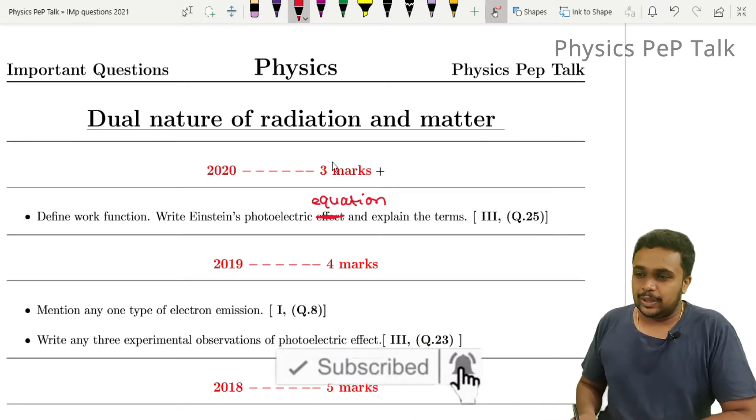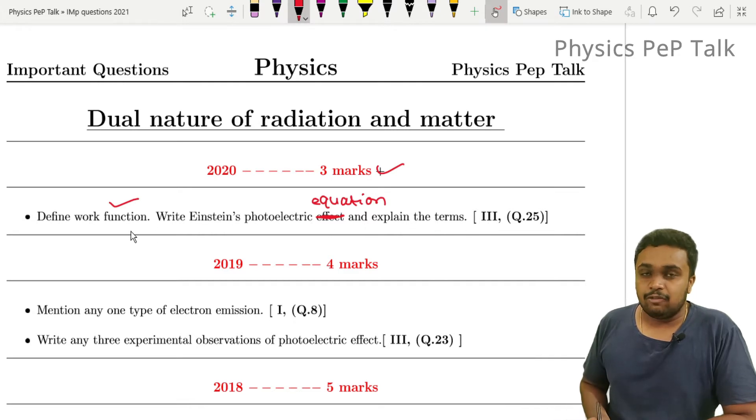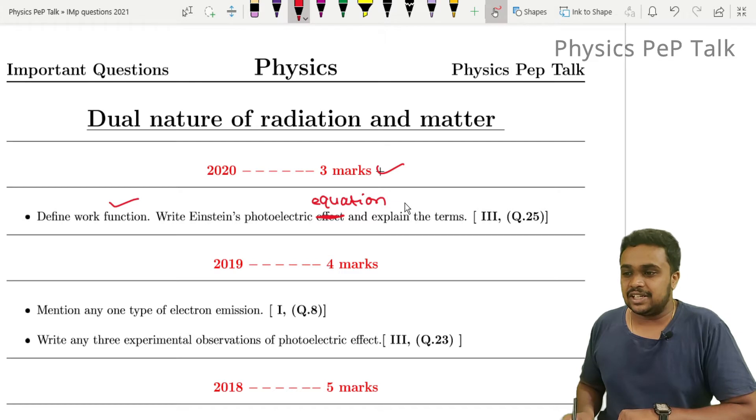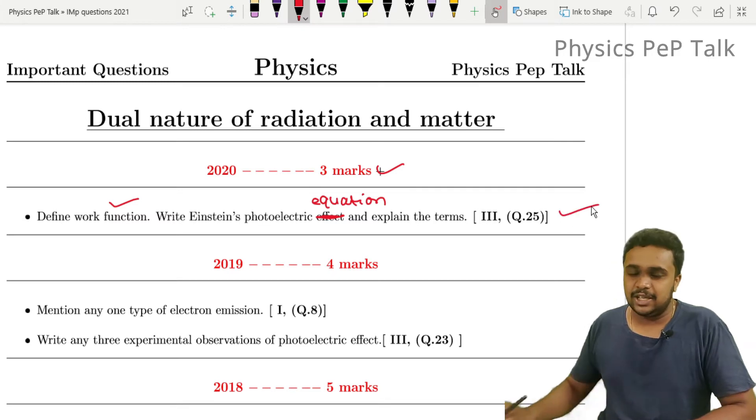In 2020, we have three marks in this chapter. Define work function. Write Einstein's photoelectric equation and explain the terms. Work function definition one mark, photoelectric equation and explanation one mark. So totally three marks, easily you can score.